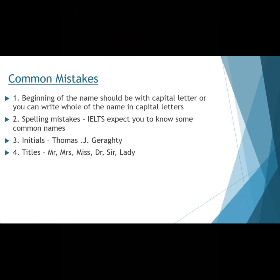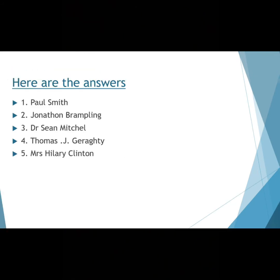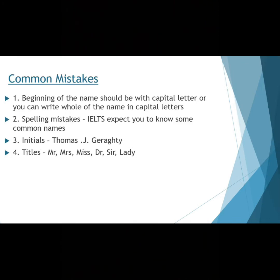The next mistake students usually make is spelling mistakes. For example, looking at the names I narrated, I gave you the spelling of Brampling in the second name Jonathan Brampling, but I did not narrate Jonathan. IELTS expects you to know the simple common names — this is a basic trick that IELTS does in the examination. So you have to keep in mind that you should know common names, and the only way is doing practice.